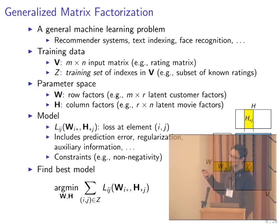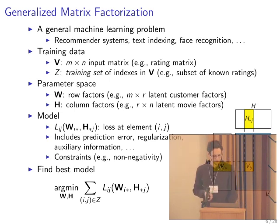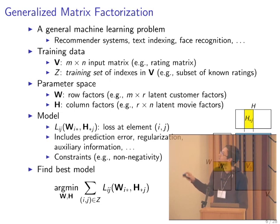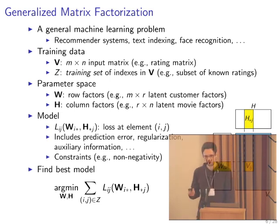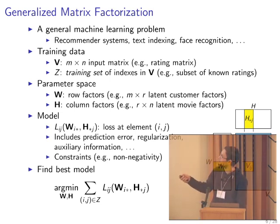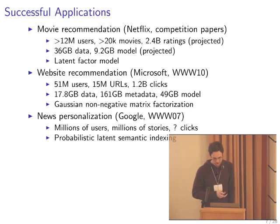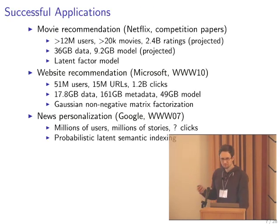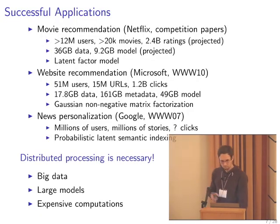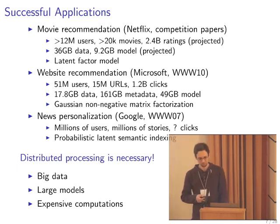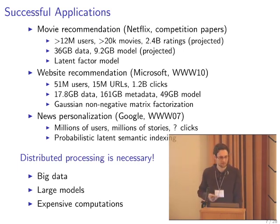Here are some instances. For movie recommendation, the Netflix competition dataset had 500,000 users and 20,000 movies, but Netflix has more than 12 million users and many more movies. Projecting up their published numbers, this would correspond to 2.4 billion ratings and 36 gigabytes of data, and 9 gigabytes of model or more, depending on the rank of the factorization. There are other large applications: ad recommendation by Microsoft or news presentation by Google. These problems are big. The bigger challenge is that computing these factorizations is expensive, so you actually need to compute them in a distributed fashion — otherwise you have insufficient CPU resources to do this in a reasonable time.